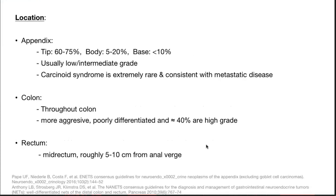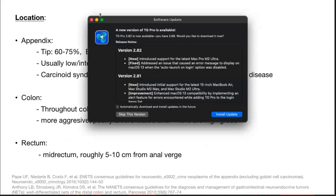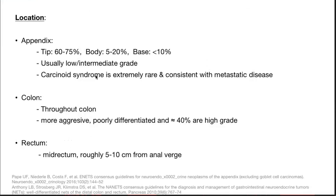Location of appendix tumors: 60 to 75% in the tip, 5 to 20% in the body, less than 10% in the base. They are usually low to intermediate grade; carcinoid syndrome is extremely rare and only present in metastatic disease. Colon NETs can occur throughout the colon and are more aggressive and poorly differentiated — nearly 40% are high grade. Rectal NETs generally present in the mid-rectum, roughly 5 to 10 cm from the anal verge.